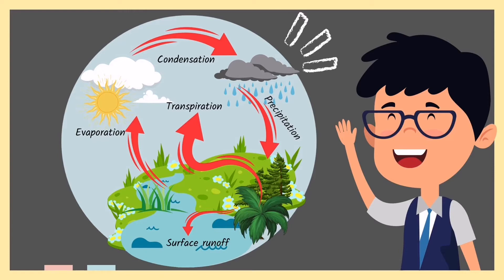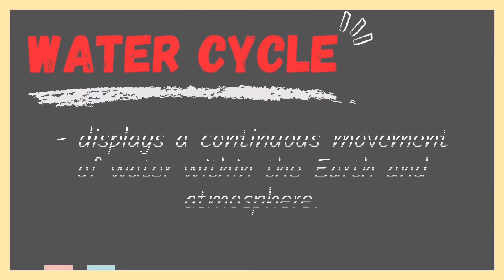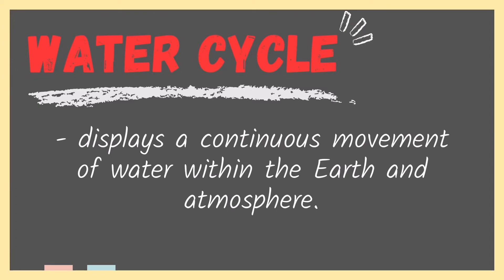The water cycle displays a continuous movement of water within the Earth and the atmosphere. The water part of the Earth is called the hydrosphere or watersphere, which covers three-fourths of its surface. Therefore, water covers a larger area of its surface than land. That is why the Earth is called the blue planet — water gives the Earth its characteristic blue color as seen from outer space.